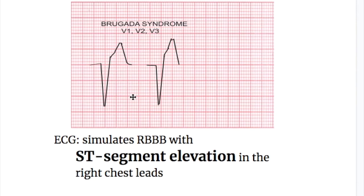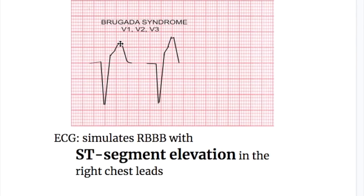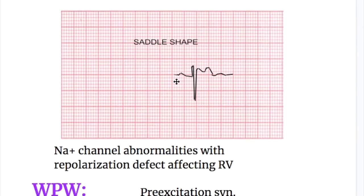It was ST segment inversion in lead V1 in right bundle branch block. There are two patterns. It may be a coved shape, or EKG may show a saddle back shape ST elevation. The basic pathology in Burgada's pattern is sodium channel abnormalities with repolarization defects affecting right ventricle.